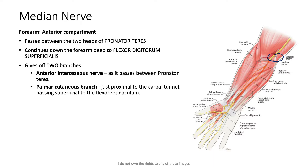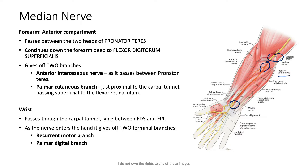After passing through the cubital fossa, where it lies medial to the brachial artery, the median nerve enters the anterior compartment of the forearm as it passes between the two heads of pronator teres. It continues down the forearm deep to flexor digitorum superficialis. In the anterior compartment of the forearm it gives off two branches: the anterior interosseous nerve proximally, and the palmar cutaneous branch distally, given off just proximal to the carpal tunnel, passing superficial to the flexor retinaculum. At the wrist, it passes through the carpal tunnel, lying between the tendons of flexor digitorum superficialis and flexor pollicis longus.